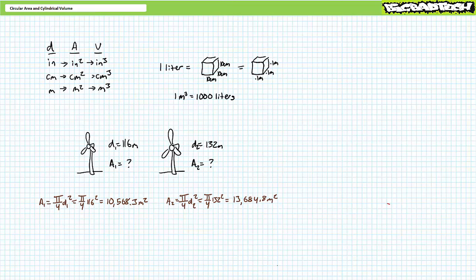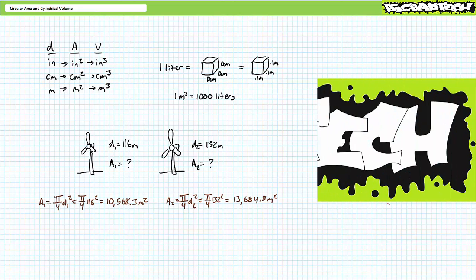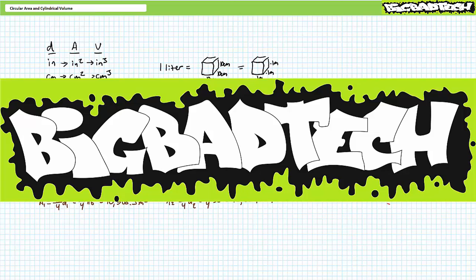In conclusion, this lecture introduced circular area and cylindrical volume calculations and explored how these calculations are commonly employed in fluid power systems. Additionally, we learned how to convert cubic inches to gallons and vice versa, and how to perform area calculations using metric units. Thank you very much for your attention and interest. We'll see you again during the next lecture of our series. Remember to tell your lab partner about this resource and be sure to check out the Big Bad Tech channel for additional resources and updates.